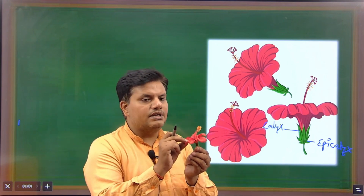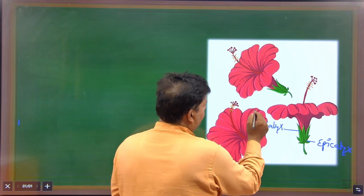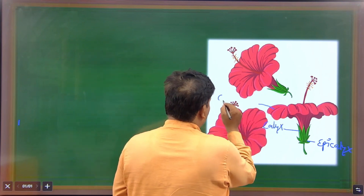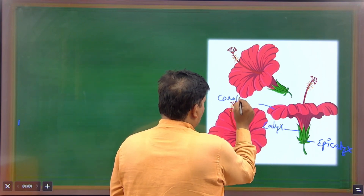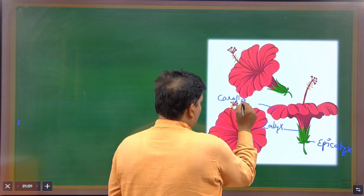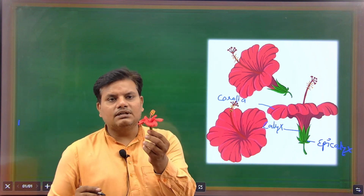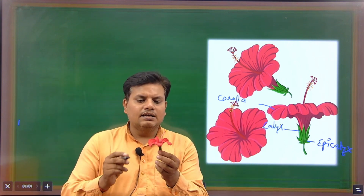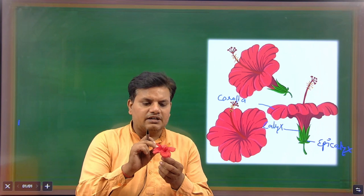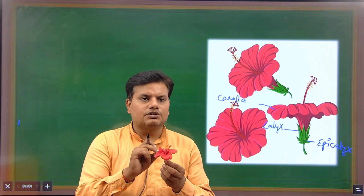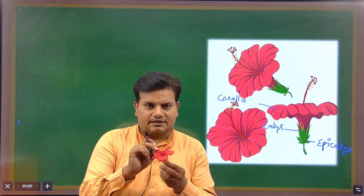Next one is Corolla. Corolla is the colorful part of the flower. It attracts insects for pollination.